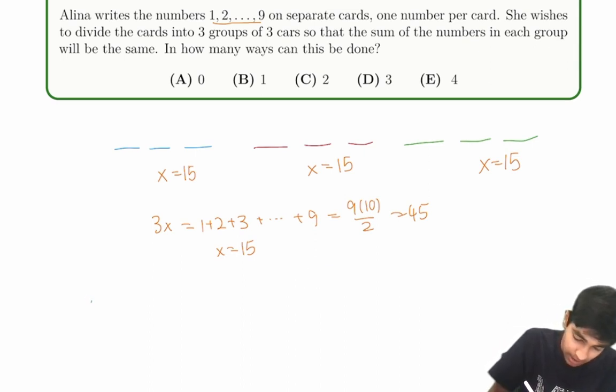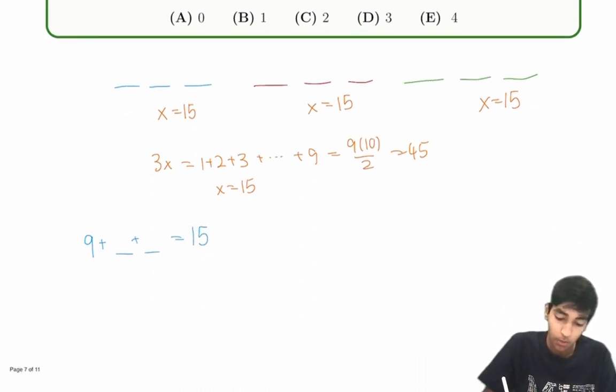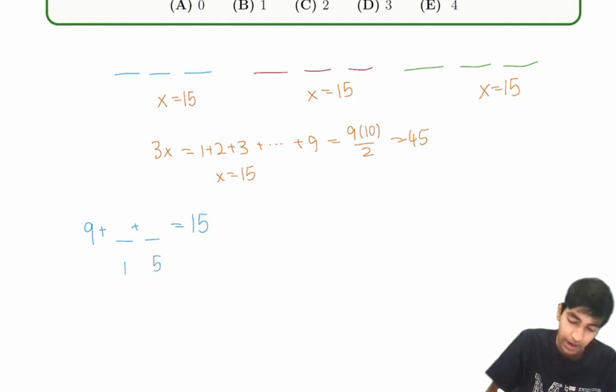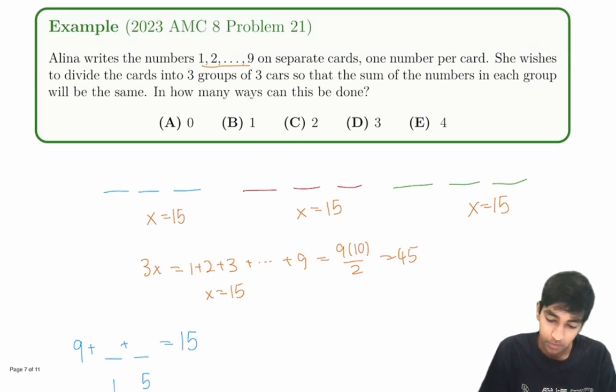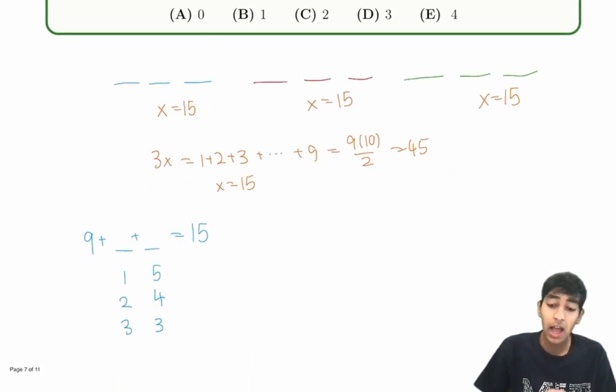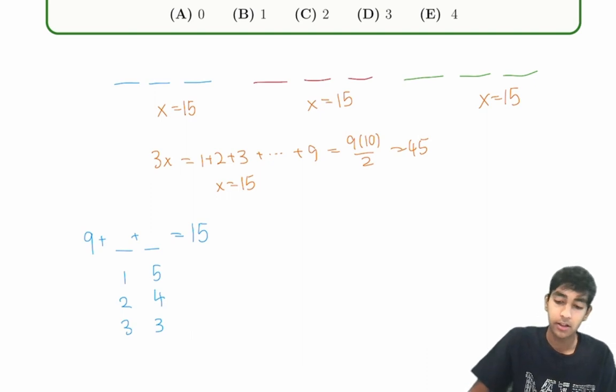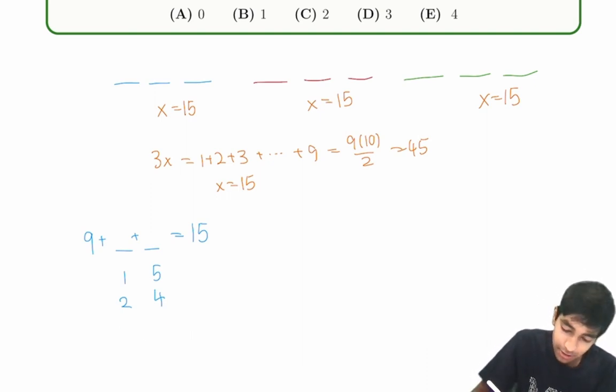So 9, let's see. Well, 9 plus 2 numbers is 15. What are the different possibilities? Well, we can have 1 and 5, right? 9 plus 1 plus 5 is 15. 9, 2 and 4. That's 15 as well. 3, 3. But no, 3, 3 doesn't work because we're dividing the cards into three groups. We cannot have the same card twice. So just 9, 1, 5 and 9, 2, 4. So now we just have two possibilities that we need to check.